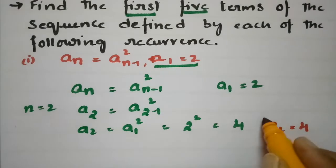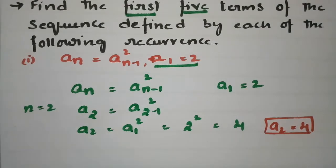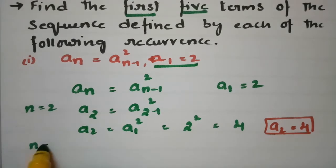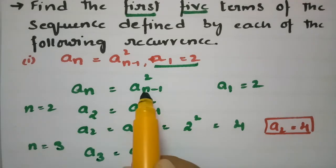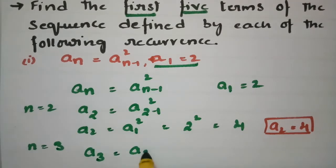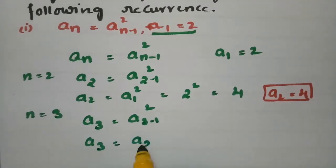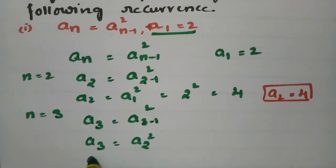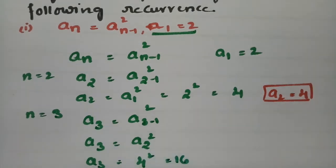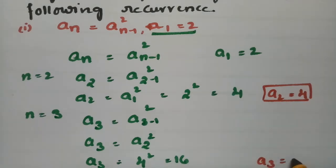Next, put n = 3. So a_3 = (a_{3-1})² = (a_2)². What is a_2? a_2 is 4, so a_3 = 4² = 16. Therefore a_3 = 16.